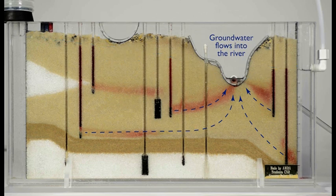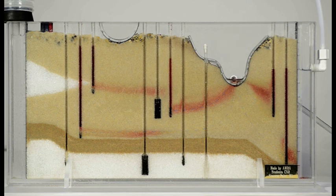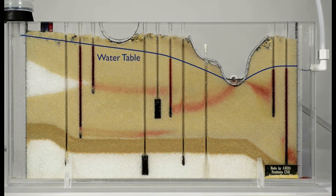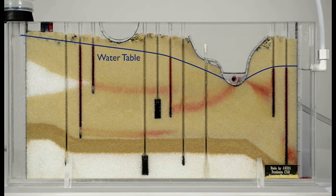Groundwater is discharging into the river and is supporting river flows. The river is connected to the sand aquifer, so as the groundwater levels rise we also see the river level rise.